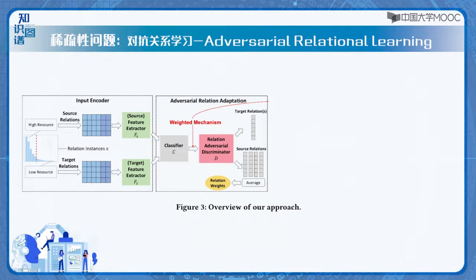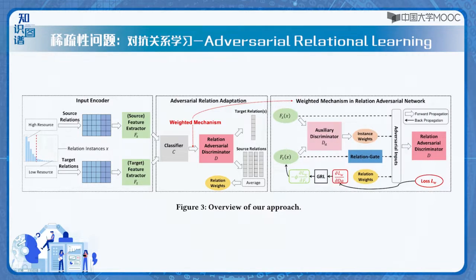模型主要包含三部分。第一部分是特征提取器，它的主要目标是学习到Source Relation和Target Relation的共有特征，并迷惑判别器。判别器的目标是努力区分Source和Target，这就好比在图像生成应用中，判别器努力区分图片的真假一样。当对抗学习的过程达到平衡时，我们希望特征提取器能学习到关系特征的不变部分。第三部分是一个Weight机制，这是因为我们经常需要从多个源关系向单个Target关系进行迁移学习，但这些Source关系的贡献可能是不一样的，甚至有一些会产生Negative Transfer，因此我们需要一个权重机制区分不同关系对于迁移学习的重要程度。